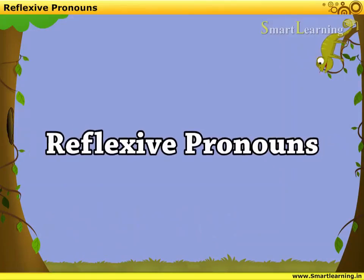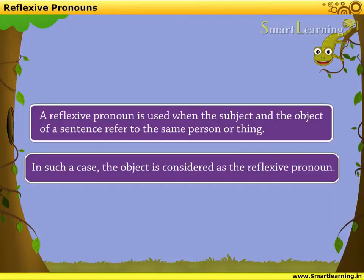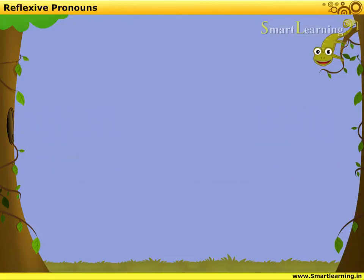Reflexive Pronouns. A reflexive pronoun is used when the subject and the object of a sentence refer to the same person or thing. In such a case, the object is considered as the reflexive pronoun. Let us learn about reflexive pronouns with the help of some examples.